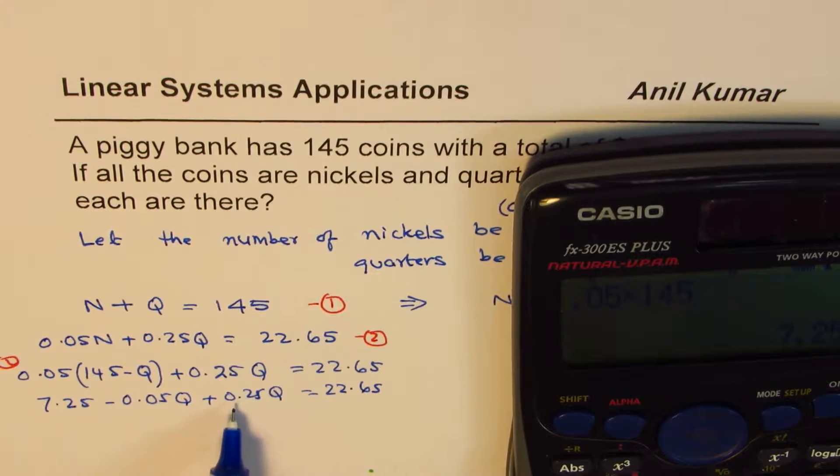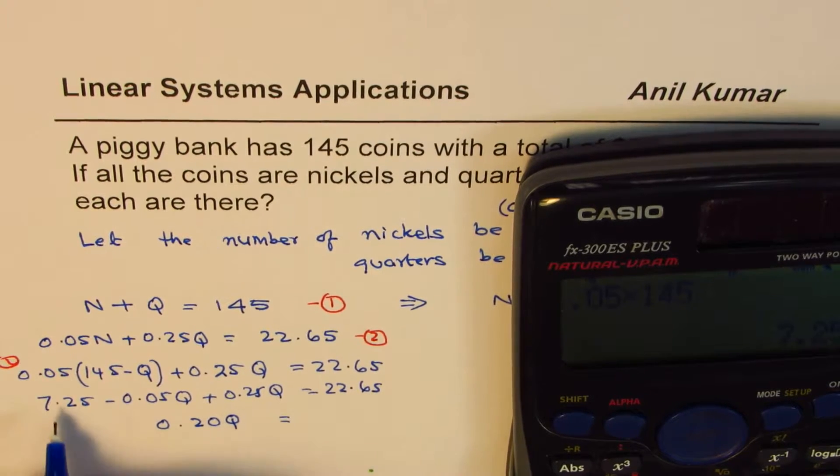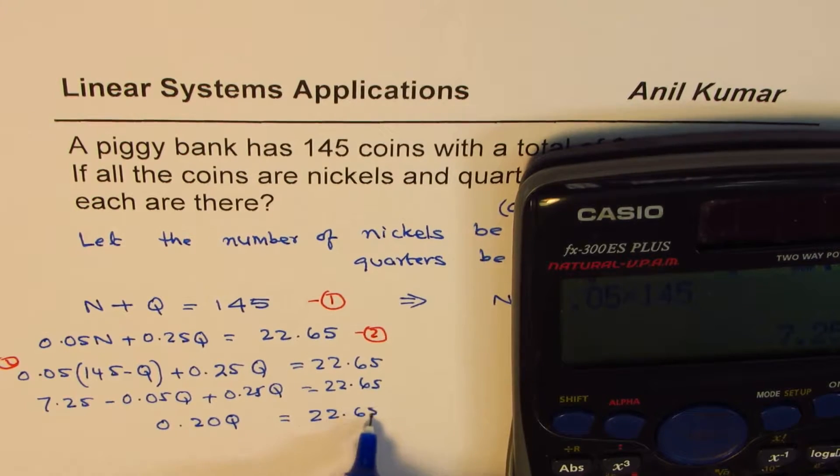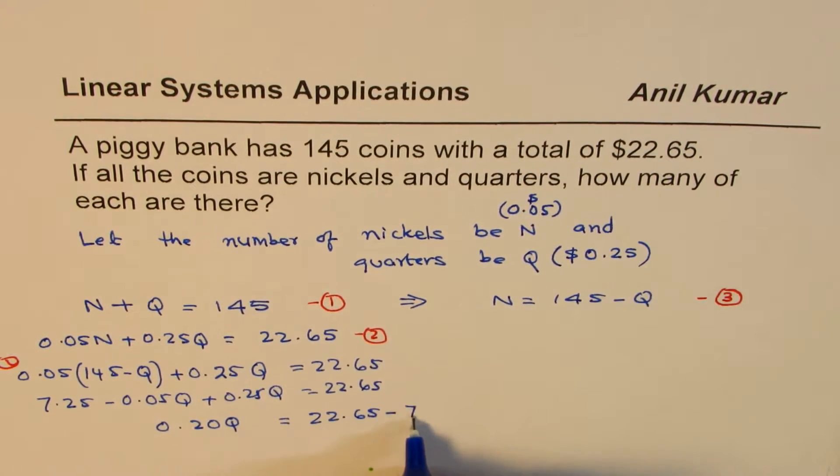So we have 7.25 minus 0.05Q plus 0.25Q equals to 22.65. Now, 0.25 minus 0.05 gives you 0.20Q. We'll take this 7.25 to the right side. So we get 22.65 minus 7.25.